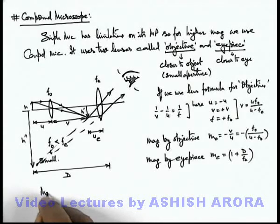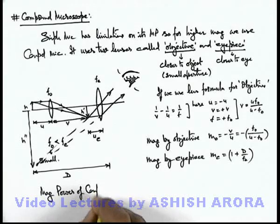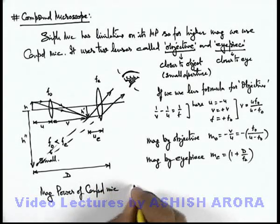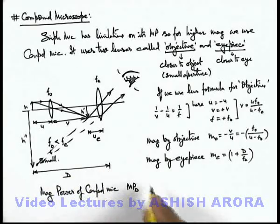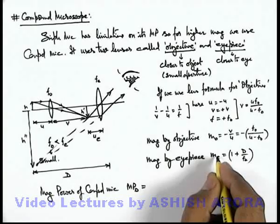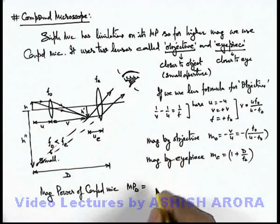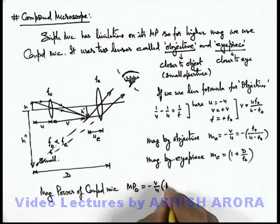This is the magnification produced by the eyepiece if the final image is obtained at the least distance of distinct vision, or the near point. So the total magnifying power of a compound microscope — if we calculate this magnifying power for the image produced at the near point — can be written as the product of these 2 successive magnifications.